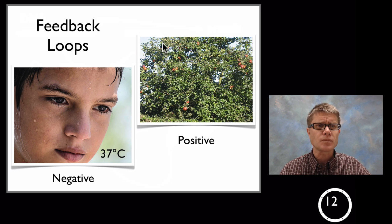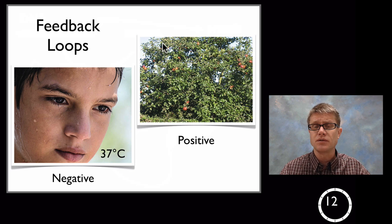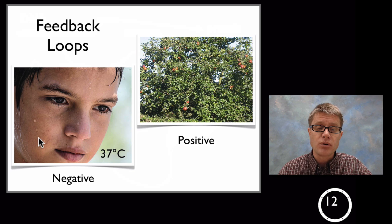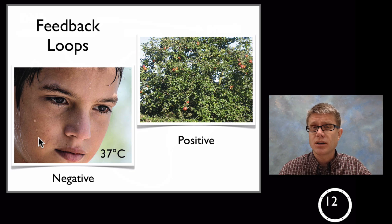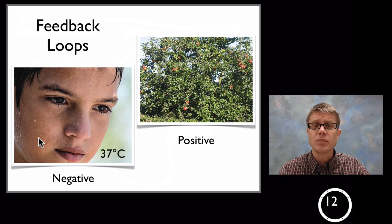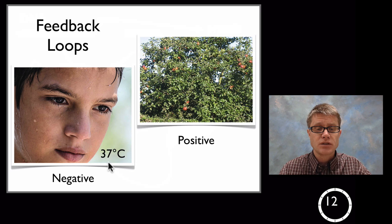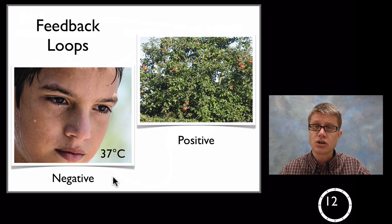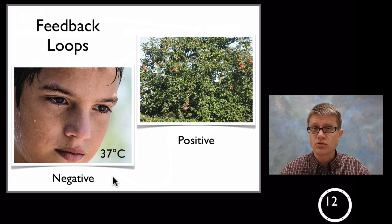So for example when your body starts to be invaded by bacteria during an infection we're going to have a positive feedback loop that's going to bring white blood cells to that area. We also have important negative feedback loops. That's when we want to keep our environment around a set point. And so the internal temperature of most humans is around 37 degrees Celsius. And so how do we maintain that? Well as our body temperature starts to drop we're going to do things like shiver. We're going to start to vasoconstrict.